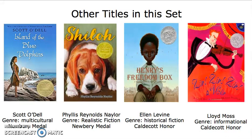Henry's Freedom Box was introduced in our class — it's a historical fiction book that I would use to talk about the Underground Railroad. The art and illustrations are really intriguing and draw you into the book, especially with the stance that Henry has on the front page. And Zin, Zin, Zin, A Violin — I thought this book was so cute. Caroline actually read this as her read-aloud in class, and I thought it would be really fun to read it to a small class and then maybe take them to a musical or a symphony, allowing the book to come to life since it talks about all the different instruments. It's a really good informational book to use in a classroom.